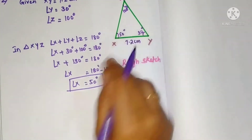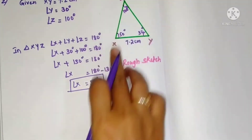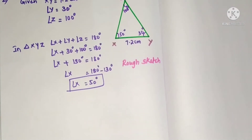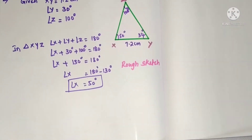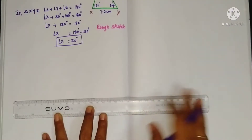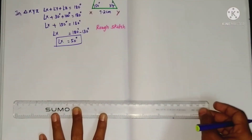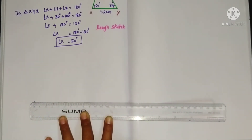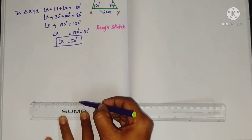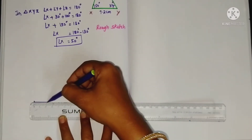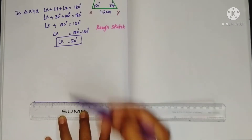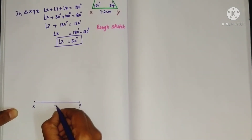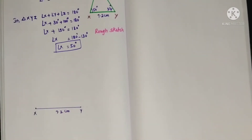So angle X equals 50 degrees. Now we can draw ray XA at 50 degrees and ray YB at 30 degrees very easily to construct the triangle. First, draw line segment XY, 7.2 centimeters — one point at 0 and another point at 7.2, then join these two points.